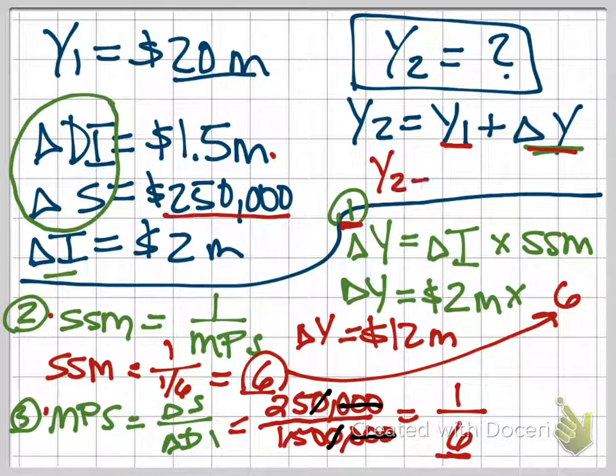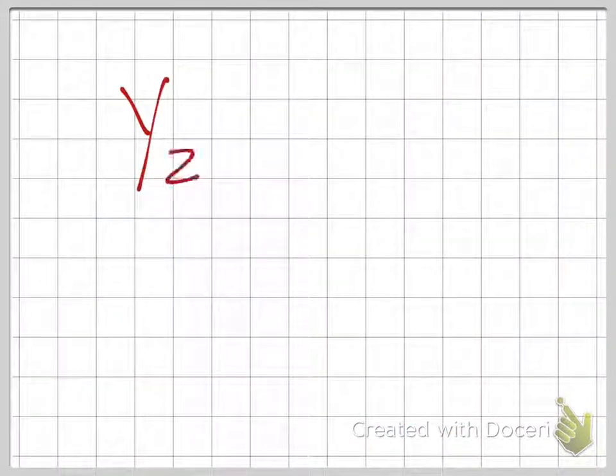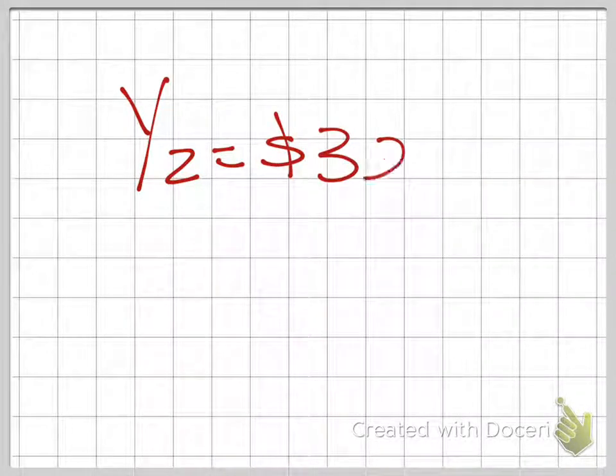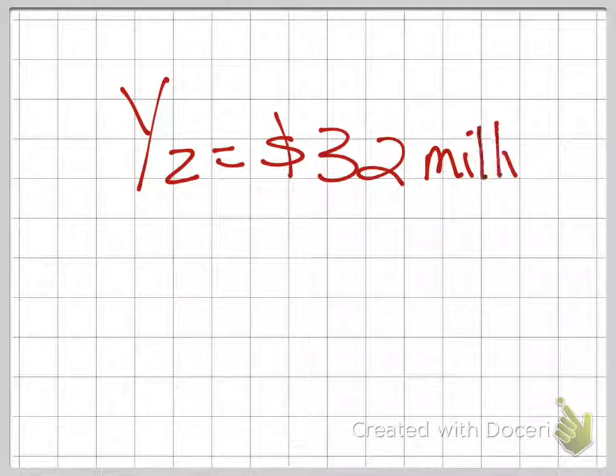So what does it increase to? We have $20 million plus the $12 million. And so our final answer is real GDP demanded increases to $32 million. I hope that helps.